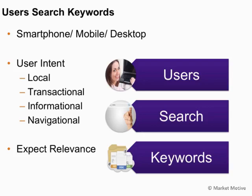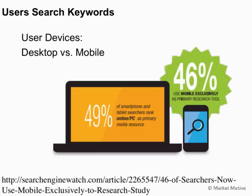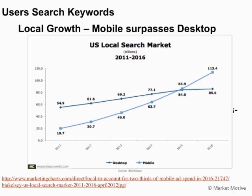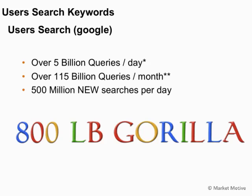The second step is users search for keywords. Users are on a variety of devices and searching with a variety of intent, expecting relevant search results — that's why they come back to Google. You need to make sure your website is mobile and PC friendly. We're entering the era of more people searching on mobile devices — iPads, iPhones, and Android devices — than ever before, actually surpassing desktop market growth, with more people searching on mobile than on local.